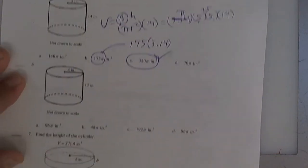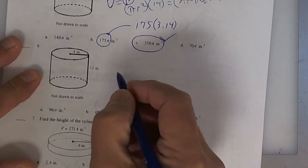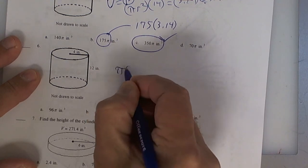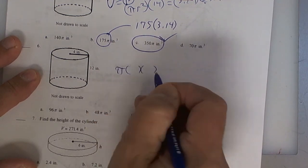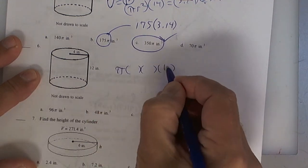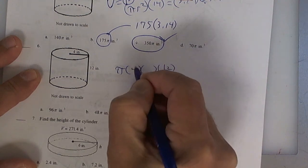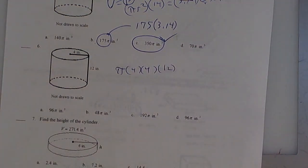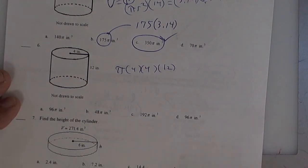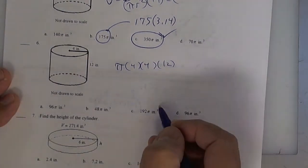The next one works the same way. It's pi radius squared times the height. The height is twelve, the radius is four. So that's four times four, which is sixteen times twelve. The answer should be 192 pi on this one. And there it is right there.